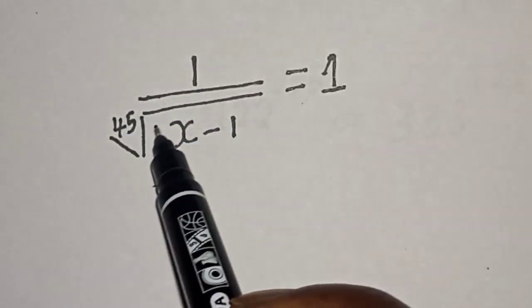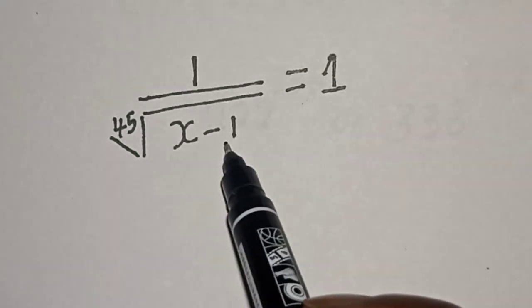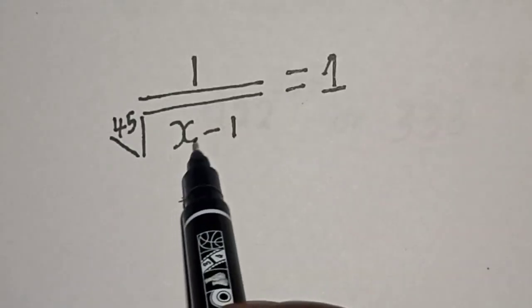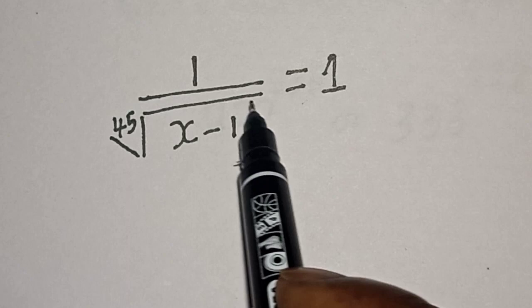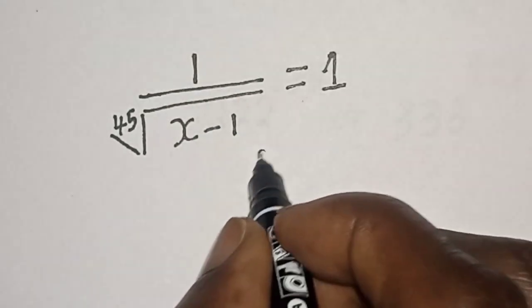1 divided by 45 root of s minus 1 is equal to 1. Hi everyone, welcome to my class. In this class, I want to find the value of s from this equation. But before we proceed, please don't forget to like, share, comment and subscribe. Solution.